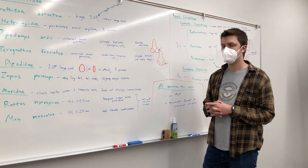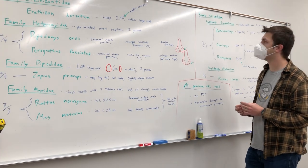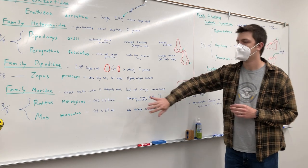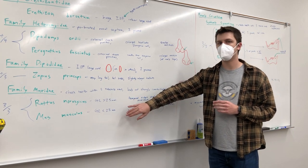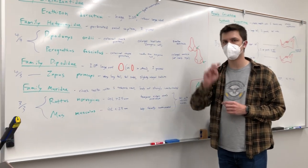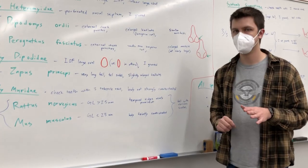For the skulls, it's a little trickier. If we're looking at our Old World, these have three over three cheek teeth, so three upper, three lower. We're not differentiating between premolars and molars.